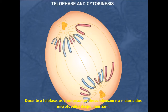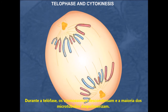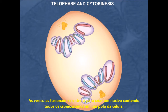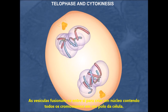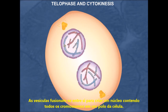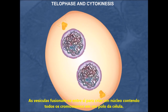During telophase, the chromosomes decondense and most of the microtubules depolymerize. Portions of nuclear membrane surround each individual chromosome, creating vesicles. The vesicles fuse with each other to create a nucleus containing all of the chromosomes at one pole of the cell.